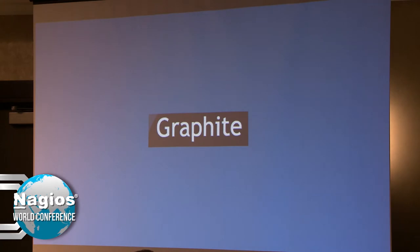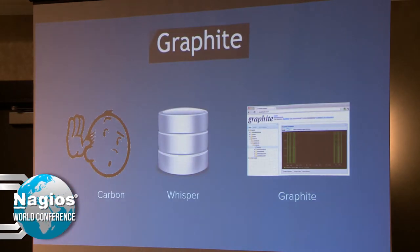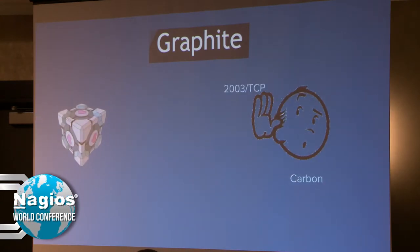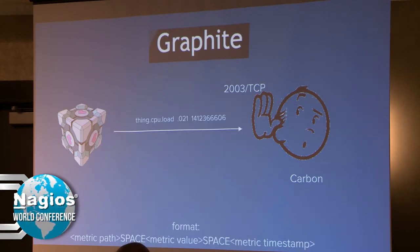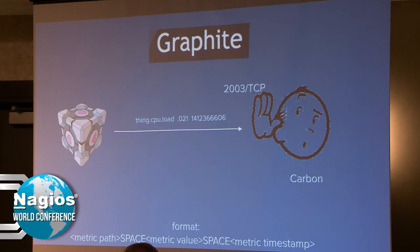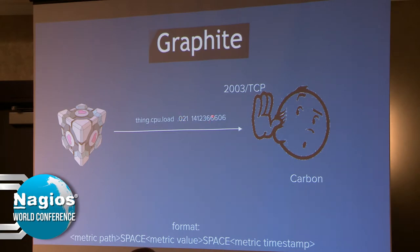Let's talk about Graphite. Graphite is by far the most popular tool in this space. It's composed of three pieces: a listener called Carbon, a data persistence tool called Whisper, and a web interface confusingly also called Graphite. Carbon's job is to listen on a network socket for inbound metrics. When you throw a metric at it, it's a very easy text-based protocol — three space-separated values: the name of the thing you care about (e.g., thing.cpu.load), the actual measurement, and an epoch timestamp, literally separated by spaces chucked into the socket, and it will graph it for you.